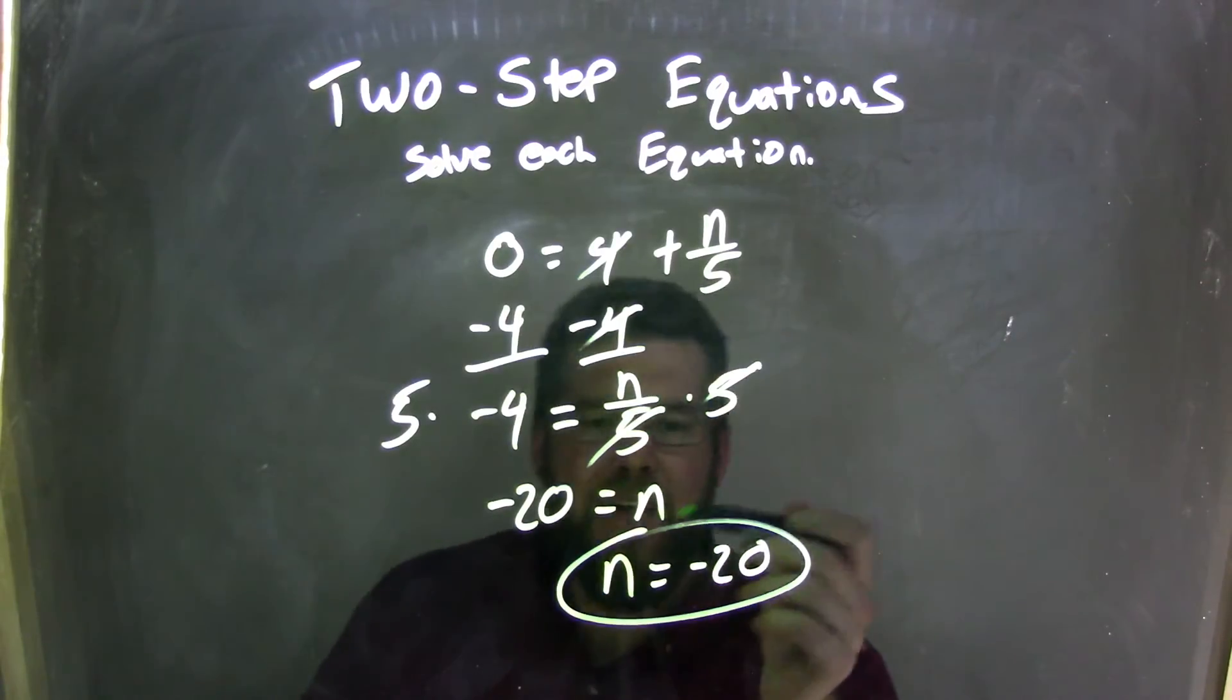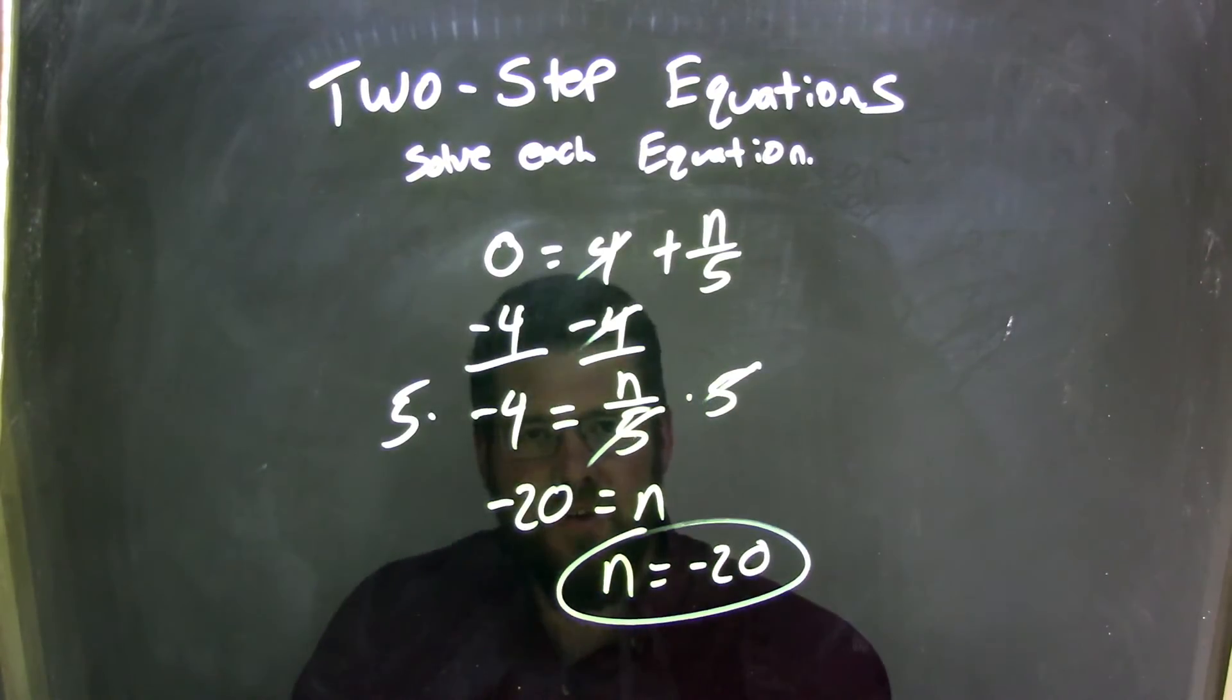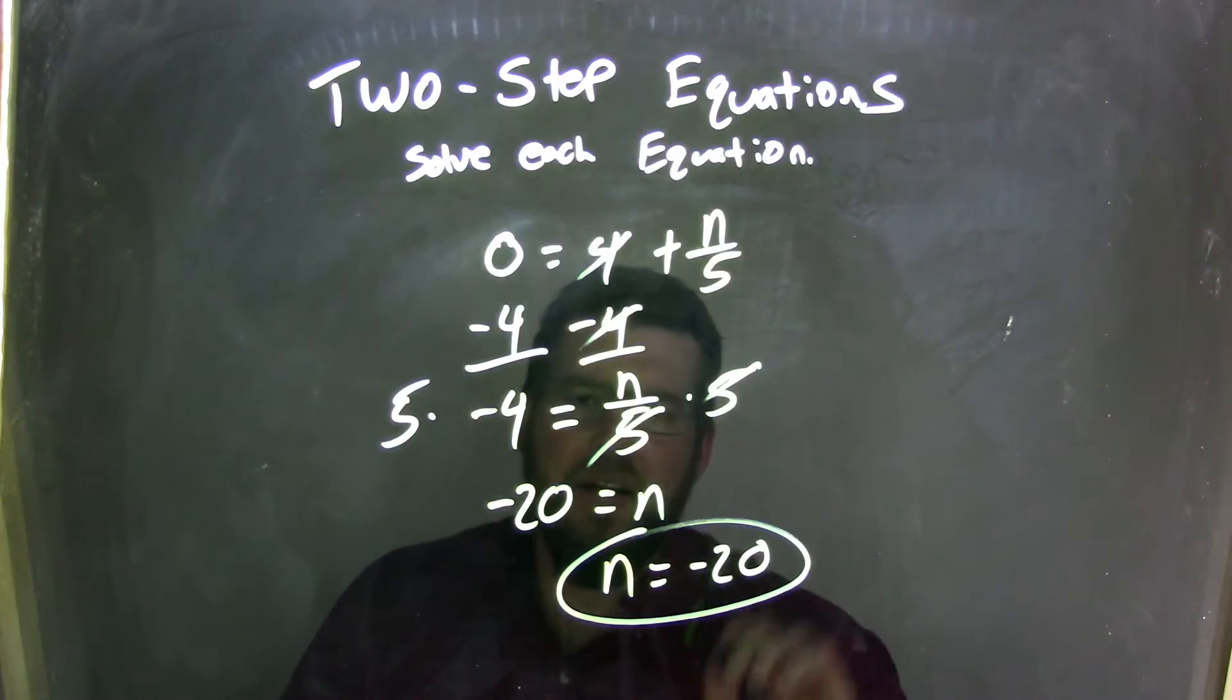Now, I've flipped it around. I have n equals negative 20, because that looks nicer. And so, our final answer here is n equals negative 20. Thank you.